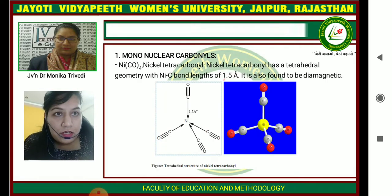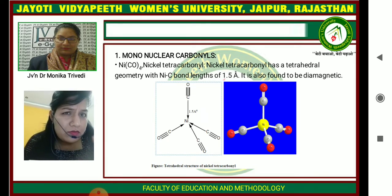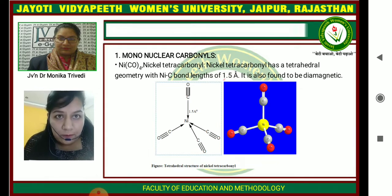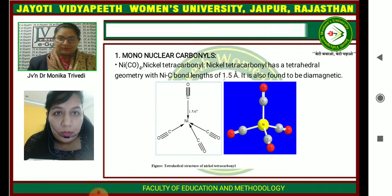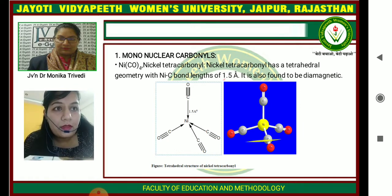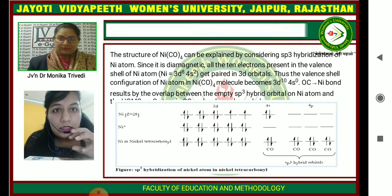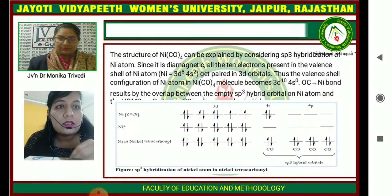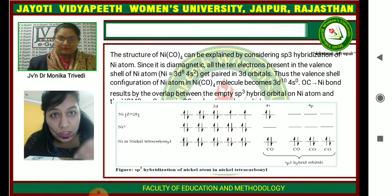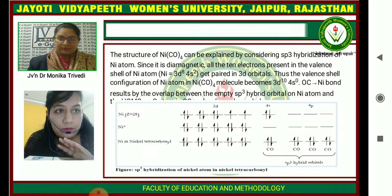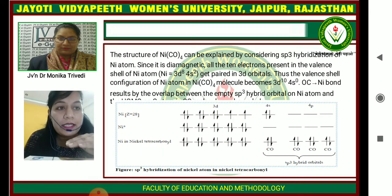For mononuclear carbonyl, the example is Ni(CO)4. It has a tetrahedral structure and the bond length between carbonyl and nickel is 1.5 Angstrom. In the electronic configuration of nickel, in the ground state it has 3d8 4s2, and in the excited state it converts to 3d10 4s0, giving four vacant orbitals — three 4p and one 4s — so four CO molecules combine giving sp3 hybridization for Ni(CO)4.